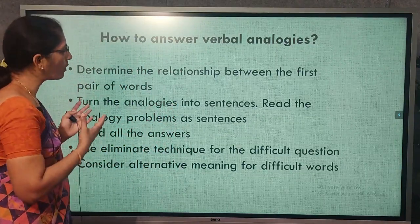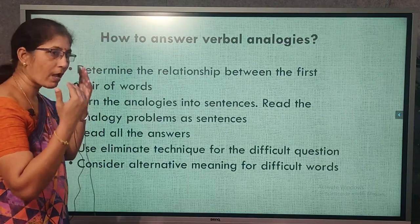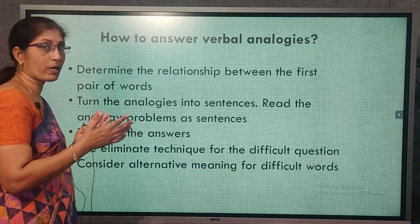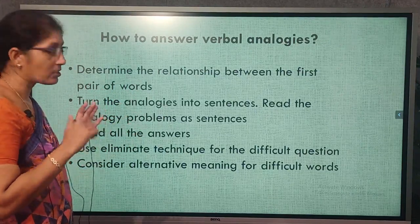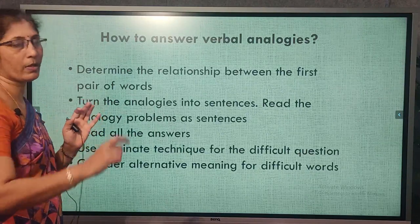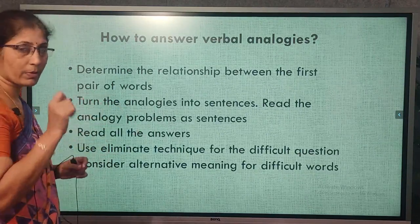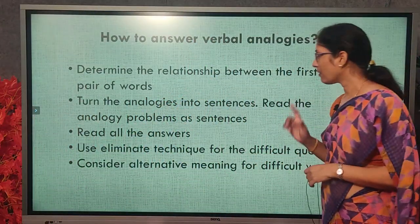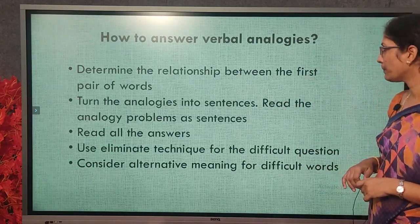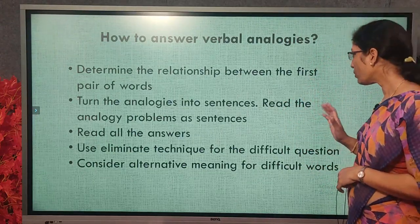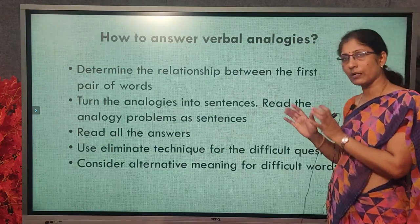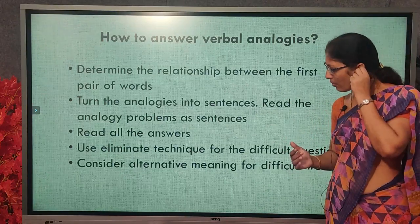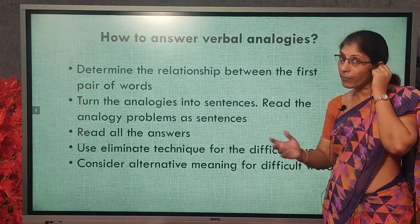Generally when we look at the words, we already have some notions, some associations formed in the mind. We tend to jump over it and make a mistake. So they distract us. That's why we need to be very careful while making a relation between the two words. First of all, you have to determine the relationship between the first pair of words. Turn the analogies into sentences — then you will never distract from the original meaning.